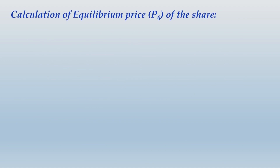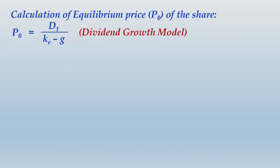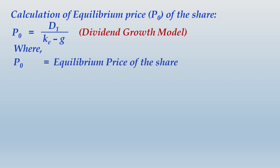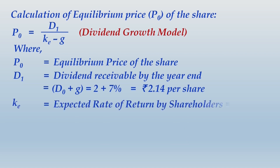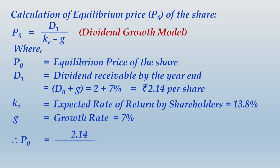Now we use the perpetual growth model: P0 = D1 / (KE − G). P0 is the equilibrium price of the share; D1 is the dividend receivable by year end. Current dividend D0 is rupees 2, growth rate is 7%, so D1 = 2 × 1.07 = 2.14. KE from CAPM is 13.8% and G is 7%. Substituting these values gives us an equilibrium price of rupees 31.47 per share.